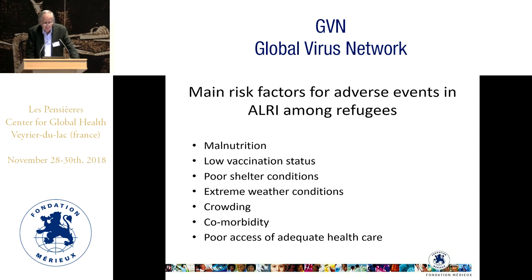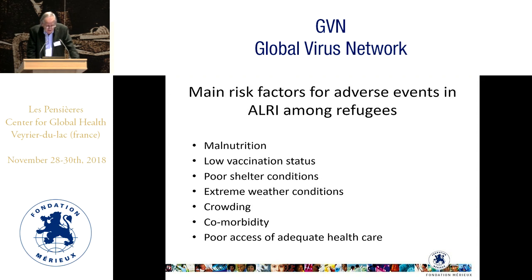The main risk factors for adverse events in lower respiratory tract infections are malnutrition — many of these populations are malnourished — and very low vaccination status. For example, the Rohingya refugees have not received any vaccinations over the last 20 years. They live under poor shelter conditions, sometimes extreme weather — the Bekaa Valley at night during winter reaches minus 10 degrees. They live in very crowded situations, especially among the Rohingyas, and in many places there is still poor access to quality healthcare.